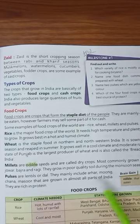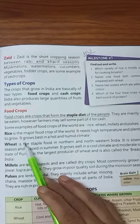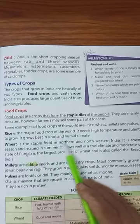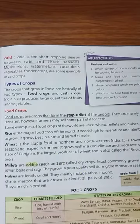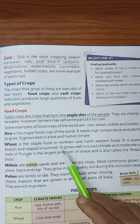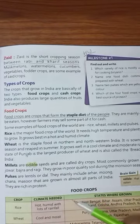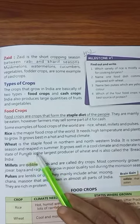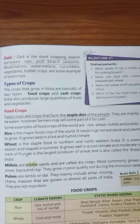Rice is the major food crop of the world. It needs high temperature and plenty of water to grow. It grows best in a hot and humid climate. Wheat is the staple food in northern and northwestern India — our Punjab also comes in the northern part. Wheat is sown in winter season and reaped in summer. Reaped and harvested mean the same thing. It grows well in cool climate and moderate rainfall.